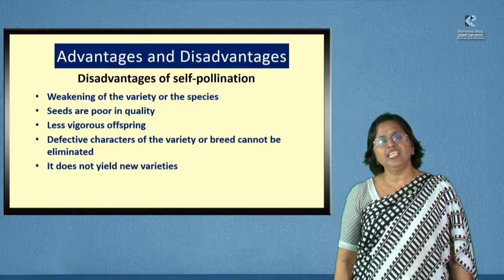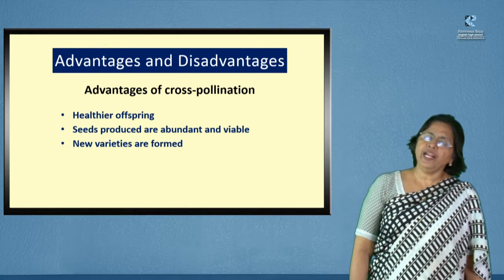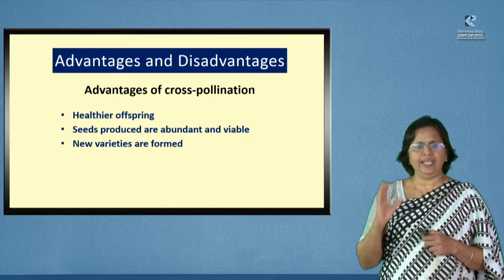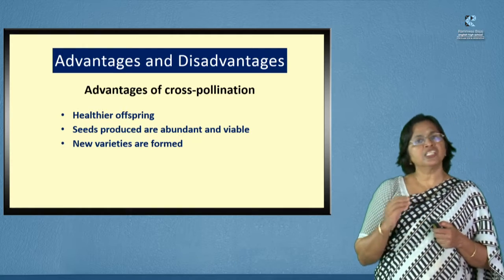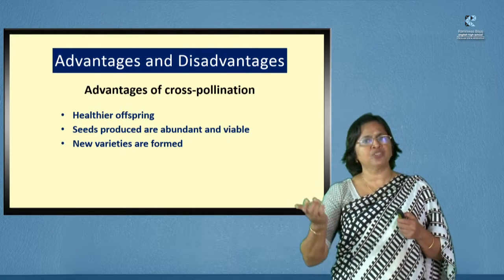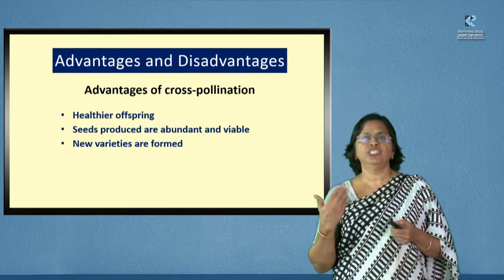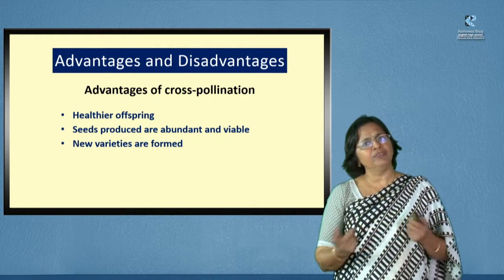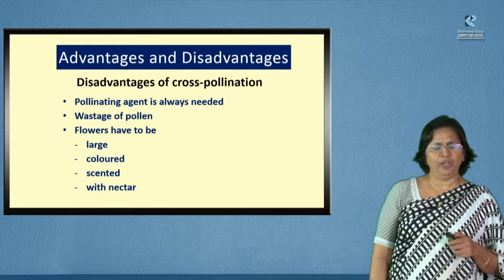That is why nature avoids self-pollination and rather promotes cross-pollination. The advantages of cross-pollination: first and foremost, the offspring is healthier because of mixing of characteristics. The seeds produced are viable and abundant — more seeds are likely to give rise to new plants when sown in the soil, and the number of seeds produced are much more than by self-pollination. Because of mixing of genetic material, newer varieties are produced whenever cross-pollination occurs.